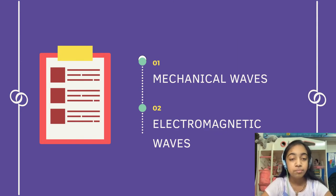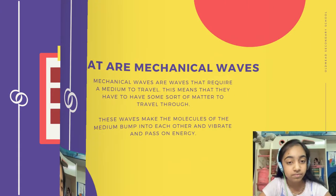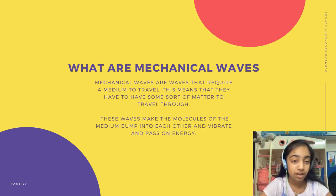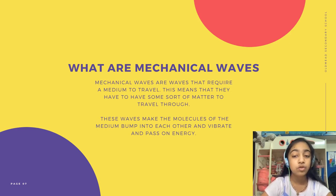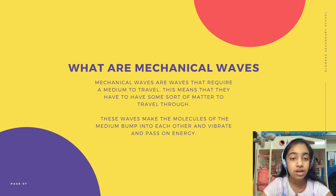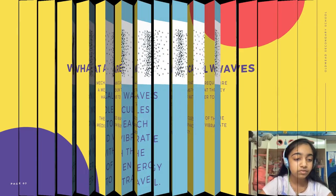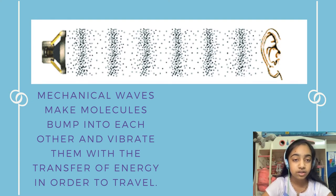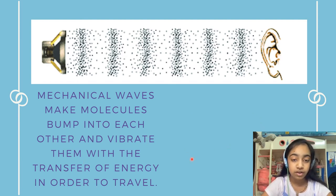There are two types of waves: mechanical waves and electromagnetic waves. Mechanical waves are waves that require a medium to travel — they have to have some sort of matter to travel through. Mechanical waves need a medium and make the molecules of that medium bump into each other, vibrate, and pass on the energy, as shown in diagrams. So mechanical waves make molecules bump into each other and vibrate them with the transfer of energy in order to travel.